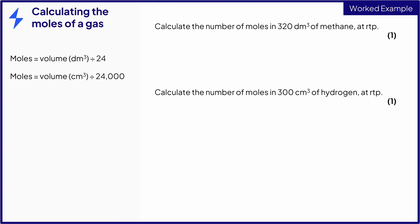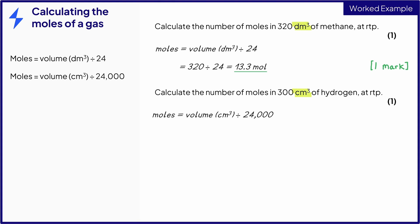We can also use the molar gas volume to calculate the amount of a gas in moles. In this first example, you were given the volume in decimetres cubed, so the equation that you need uses 24 as the molar gas volume. Simply substitute the numbers in to give your final answer. In the second example, the volume of hydrogen is given in centimetres cubed, so you need to use this version of the equation. Substitute the numbers in to give the final answer.